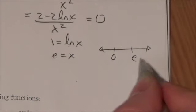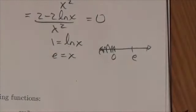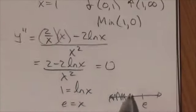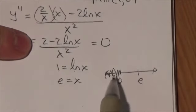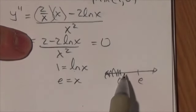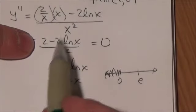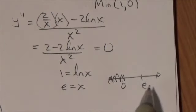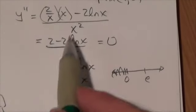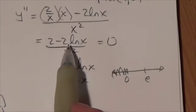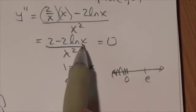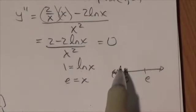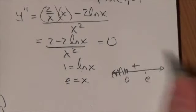So here's 0, here's e. I put 0 here because there's no function to the left, so I'm not going to worry about that. Take a look at our second derivative. Let's choose a number less than e here. If we choose a number less than e, then the natural log—maybe choose 1, the 1's easy. 2 times the log of 1, log of 1 is 0, so it's going to be 2 minus 0 over 1. It's going to be positive. So this is going to end up being concave up.